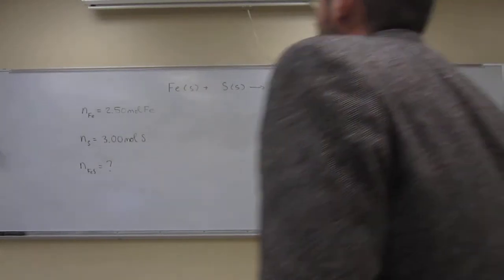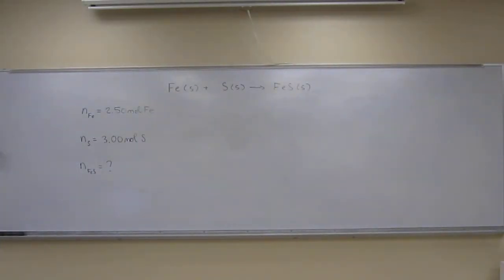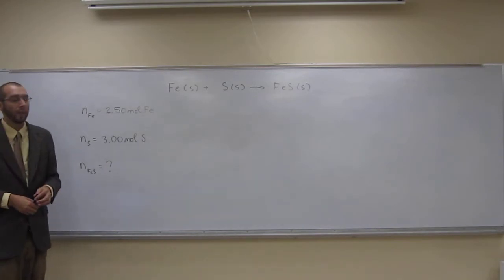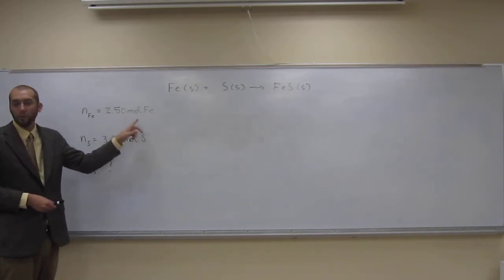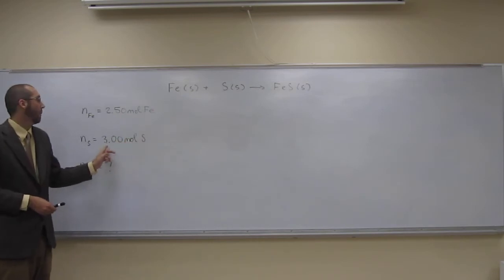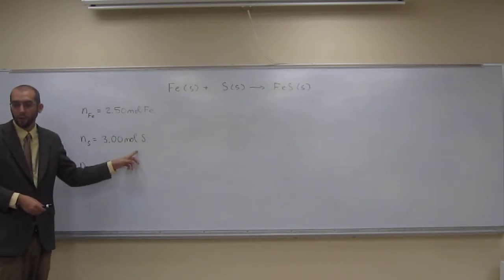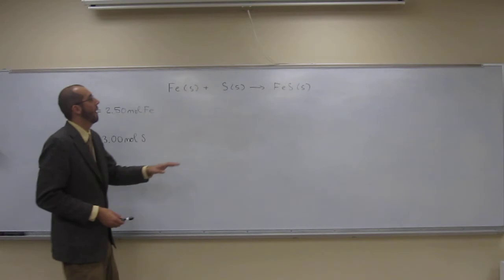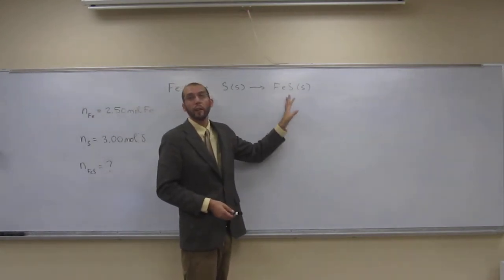Okay, let's do a limiting reagent problem. Using the given reaction equation, if you heat 2.50 moles of iron and 3.00 moles of sulfur, how many moles of iron sulfide are formed?